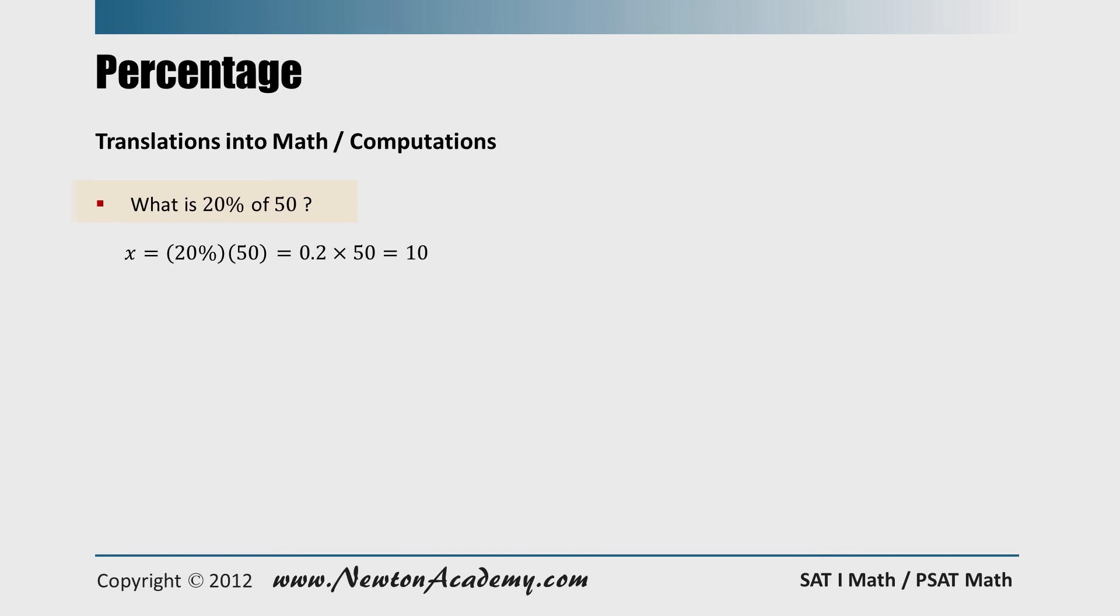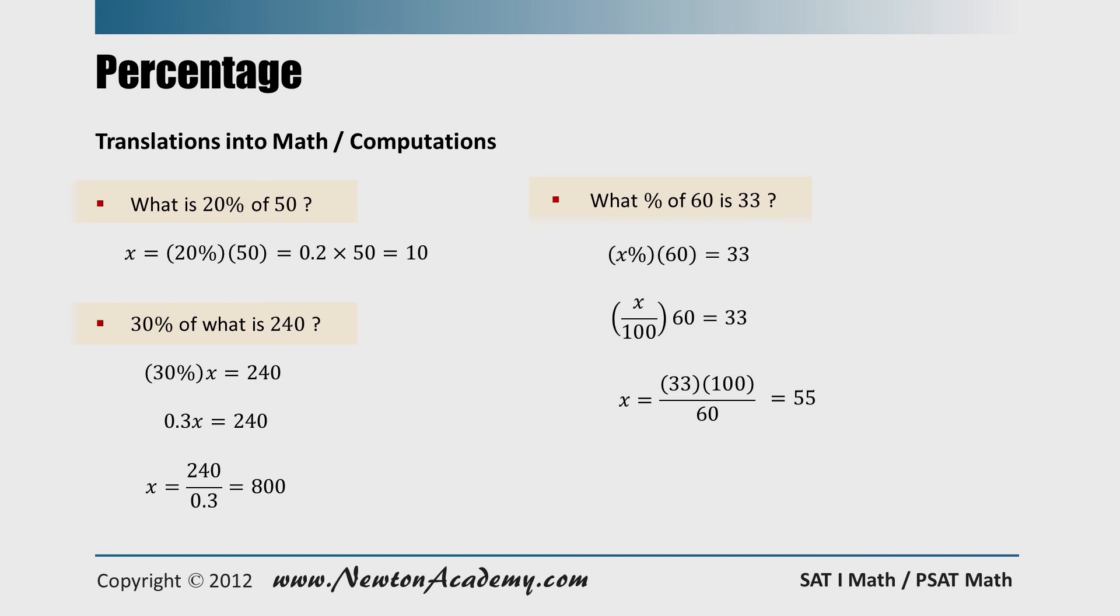If the question is, 30 percent of what is 240, then we have 0.3X equals 240, and X is 800. If the question is, what percent of 60 is 33, we have this equation. And changing X percent into a number by dividing 100, we have this. And after transposing 60 and 100 to the right, we have X equals 55.